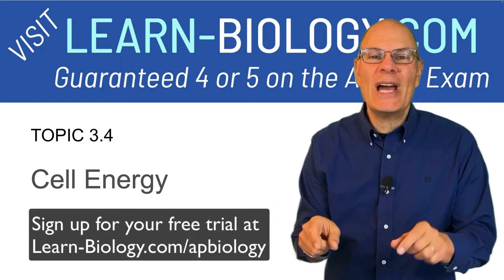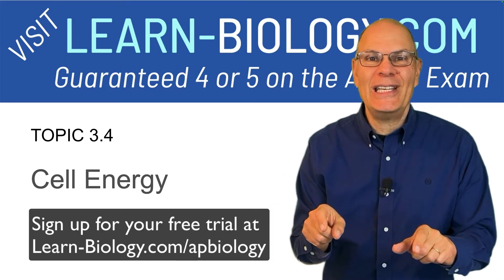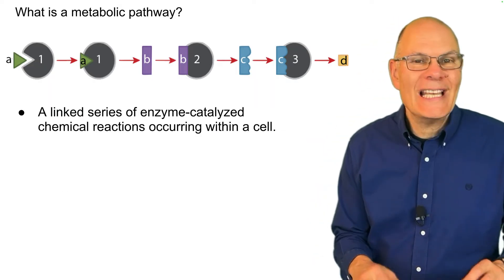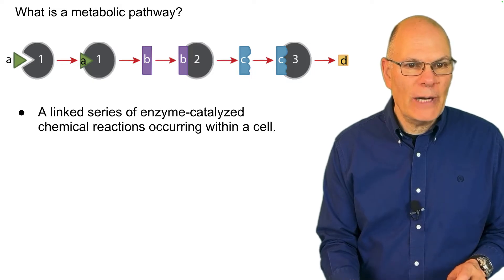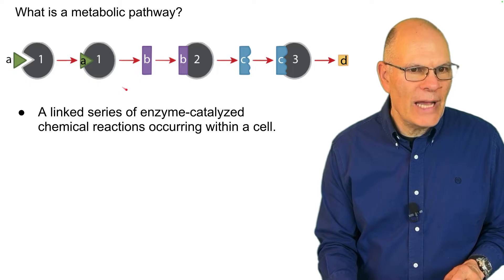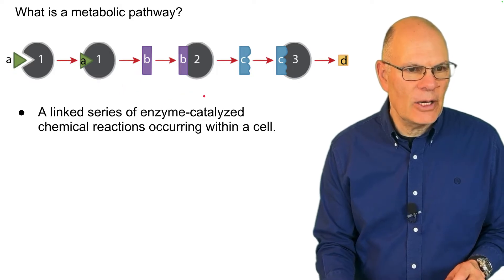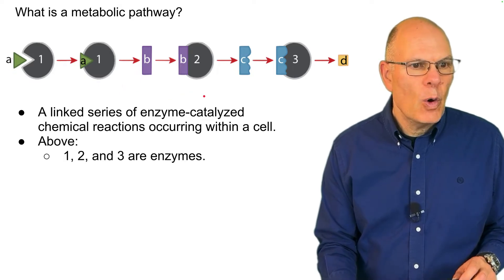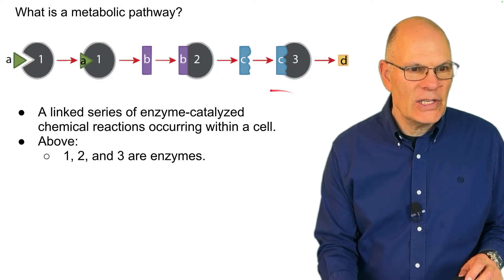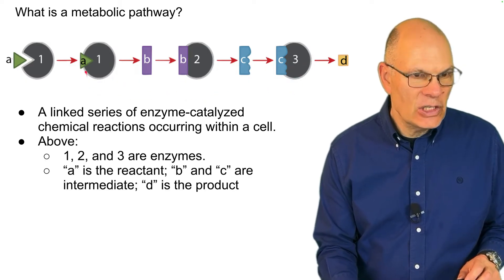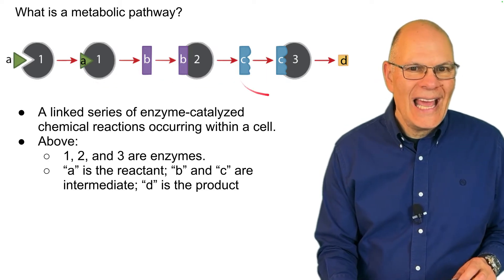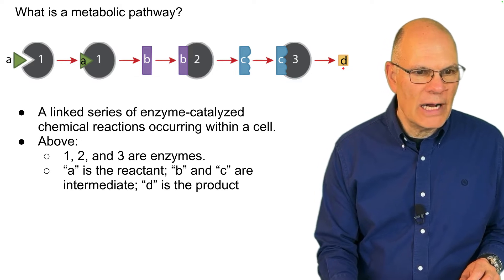What is a metabolic pathway? A metabolic pathway is a linked series of enzyme-catalyzed chemical reactions occurring within a cell. Here you can see that these are all separate reactions but they're linked together. Enzymes 1, 2, and 3 catalyze each step. A is the initial reactant, B and C are what we call intermediates, and D is the final product.